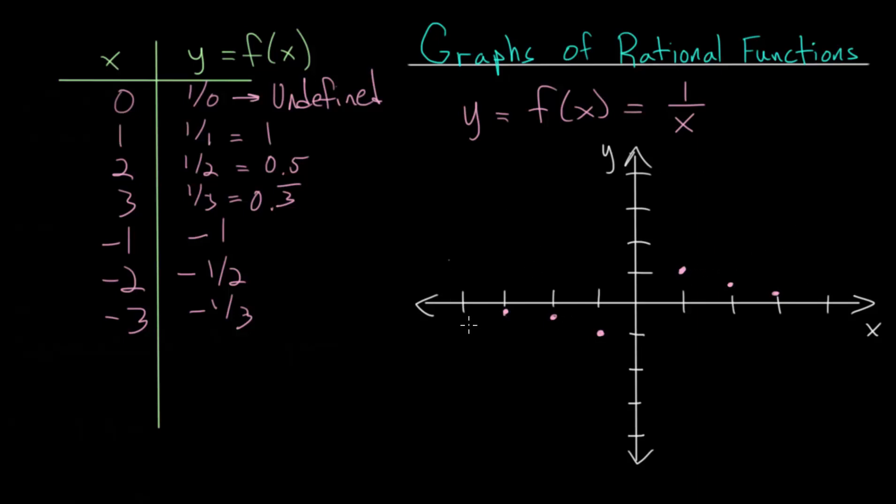It's very difficult to see a pattern just from these points. We will need to look at other points. We know that the function does not exist at 0. But what happens to the function when we look at values that are very close to 0?